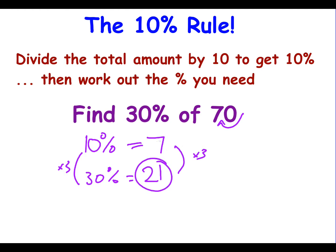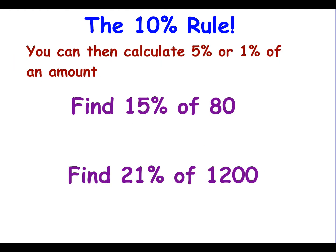So we find out what 10% is first, and from there we can work out 20%, 30%, or even halve it to get 5%, and so on. This 10% rule is really powerful because you can calculate 5% by halving the 10% value, or 1% by dividing by a hundred. Let's look at two examples before we give you some to practice with.